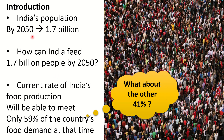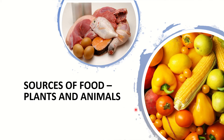India's population will reach 1.7 billion by 2050. How can India feed 1.7 billion people by 2050? The current rate of India's food production will be able to meet only 59% of the country's food demand at that time. So what will happen to the other 41%?